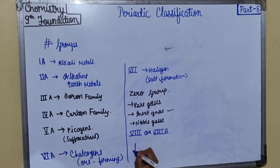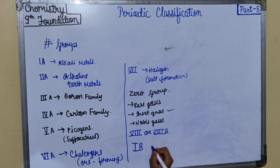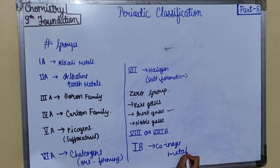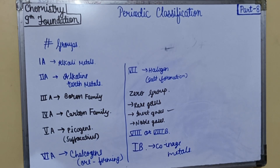Then there is the 1B group. Its special name is coinage metals. The reason is that these copper group metals were used for the manufacture of currencies in the olden days, hence they were called coinage metals.